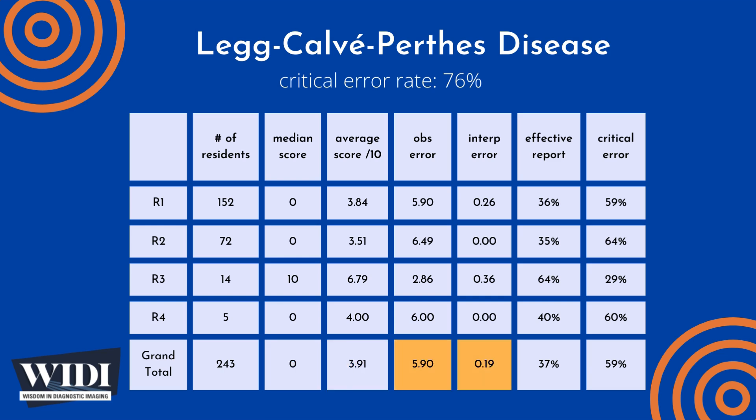Overall, the average number of points lost out of 10 due to observational discipline was 5.90. At the same time, 0.19 points were lost due to interpretive errors on the part of the residents.